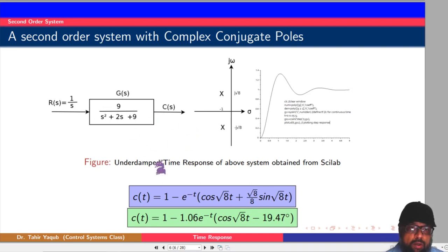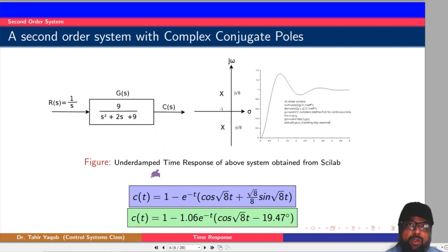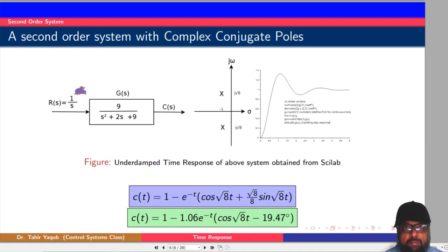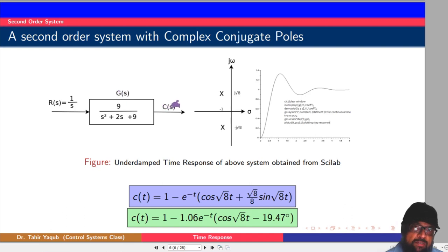To find the output response C(t) of this system, we multiply the input with the transfer function to get C(s), then make the partial fraction expansion of C(s). We find constants A, B, and C by equating coefficients of s² and s, and we get the simplified form of the output response in the s-domain. We then split this equation into two forms whose Laplace inverses are known standard formulas, and finally go from the s-domain to the time domain to get the result.